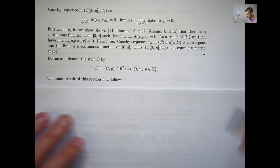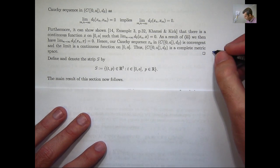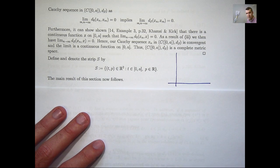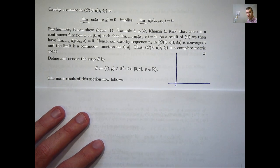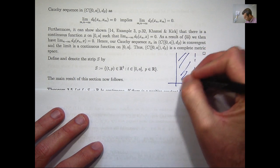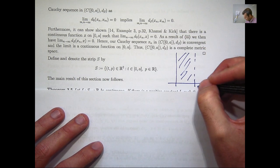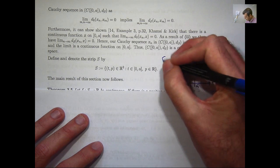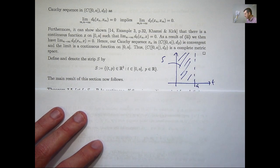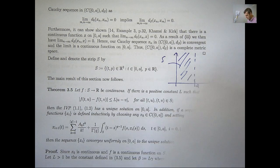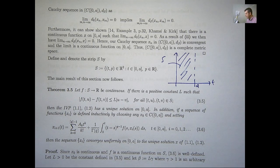In what follows, we are going to apply these ideas to the initial value problem 1.1, 1.2. We've got all the machinery to do it now. Let's think of S as some sort of infinite strip — this will be the domain of the function f on the right-hand side of 1.1. Let's have a look at the main result.